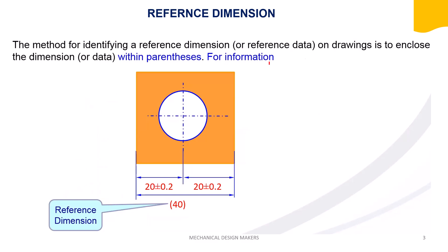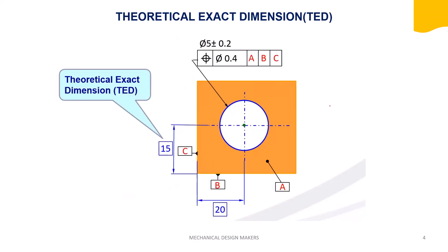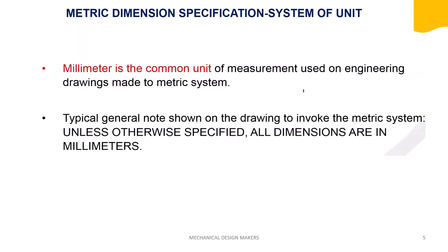Reference dimension: any dimension within parenthesis is called a reference dimension. It is used in drawing for information purposes only, not for inspection and measurement. Theoretical exact dimension (TED): any dimension put inside a rectangle is called a theoretical exact dimension. I will explain this in depth in a later video.